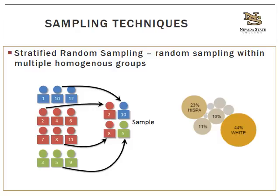You can see the racial and ethnic composition of NSC on the slide, taken right from the NSC website. Some groups are much larger than others. You would want to strategically sample within each ethnic or racial group to ensure everyone is included and that the composition reflects the population — 44% white, 23% Hispanic, 11% Black, 10% Asian, and so on. Stratified random sampling is great for obtaining a representative sample, but it requires access to the population and prior knowledge of how grouping may impact results.